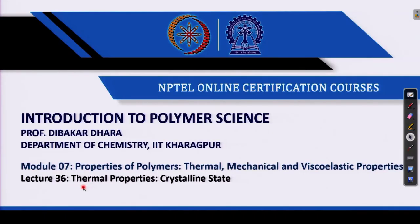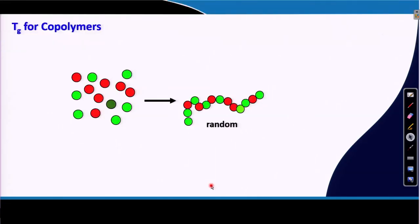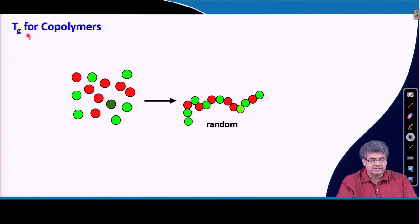Welcome back. In this lecture I will continue my discussion on thermal properties, and today I will cover the crystalline state of polymers. Before I start on the crystalline state, let me complete a couple of discussion points on glass transition temperature from the last lecture.